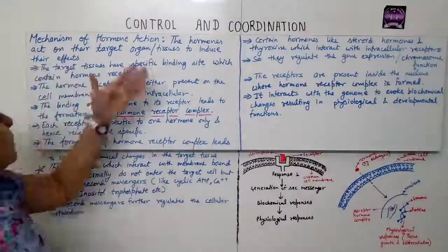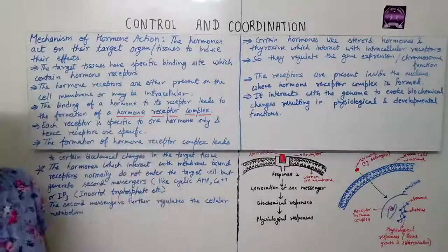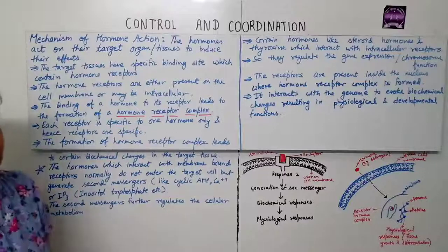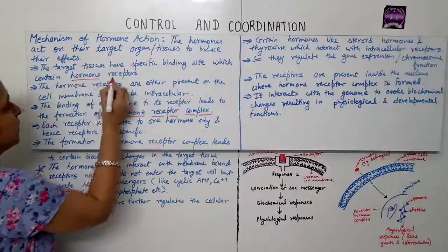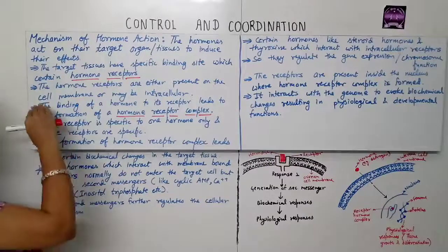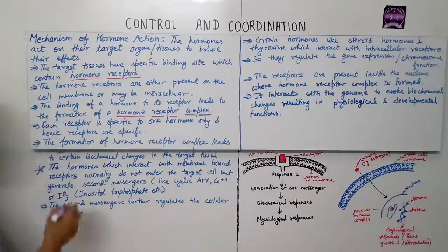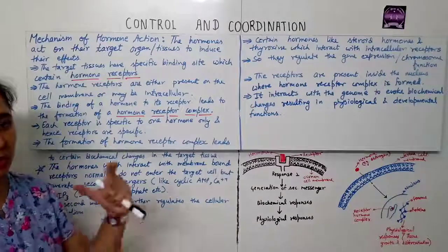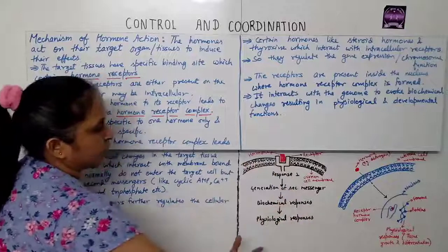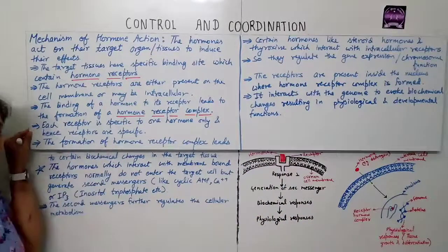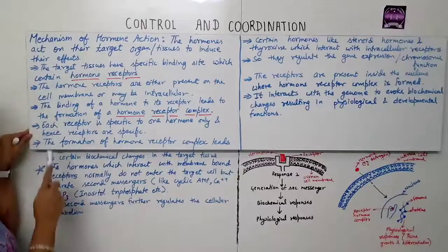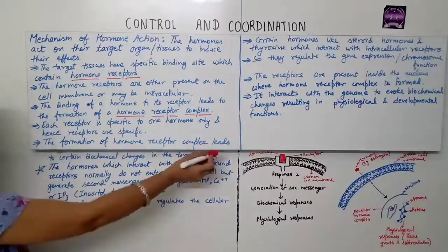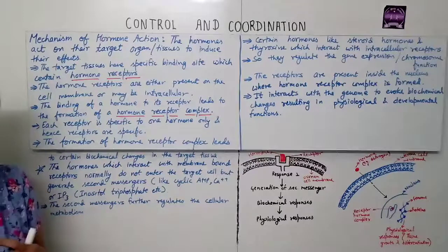Now we will study the mechanism of hormone action. Hormones act on their target organ or tissue to induce their effects. The target tissue has specific binding sites containing hormone receptors. These receptors are either present on the cell membrane or may be intracellular. The binding of a hormone to its receptor leads to the formation of a hormone-receptor complex. Each receptor is specific to one hormone only.